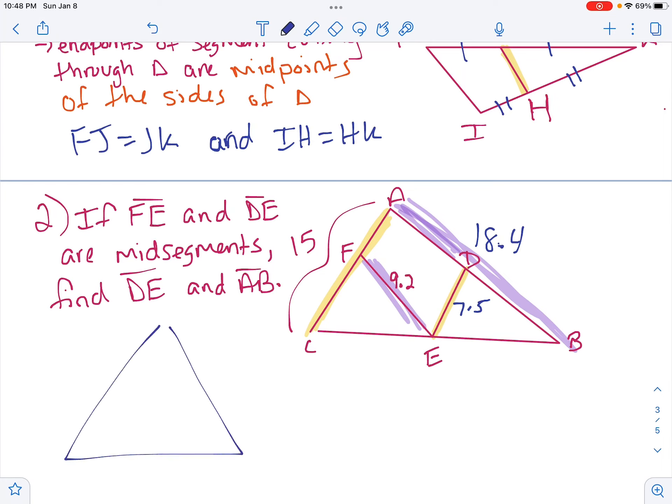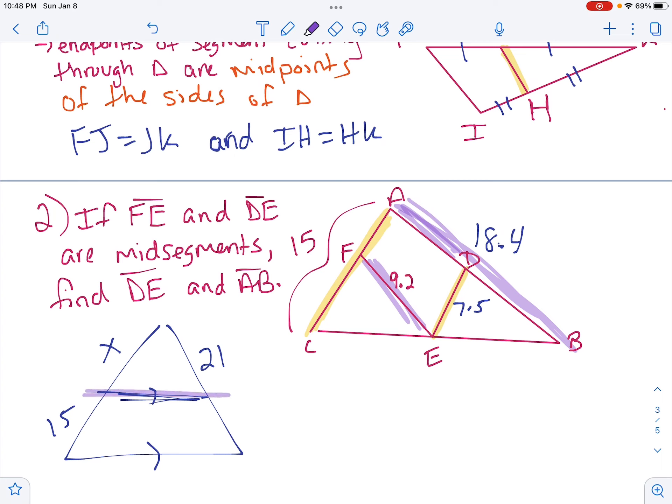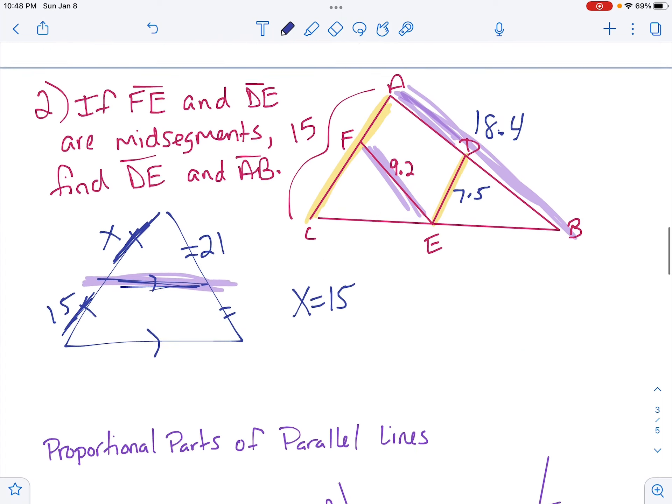Here's the other way this can be used. Let's say you're given a triangle with a mid-segment. You're told this is a mid-segment, and you're given, let's say, this is X, this is 15, this is 21. Well, if this guy right here is a mid-segment, that means it cuts the sides in half, which means X equals 15, because it would be the same as its other half. So you can see both of those with mid-segments.